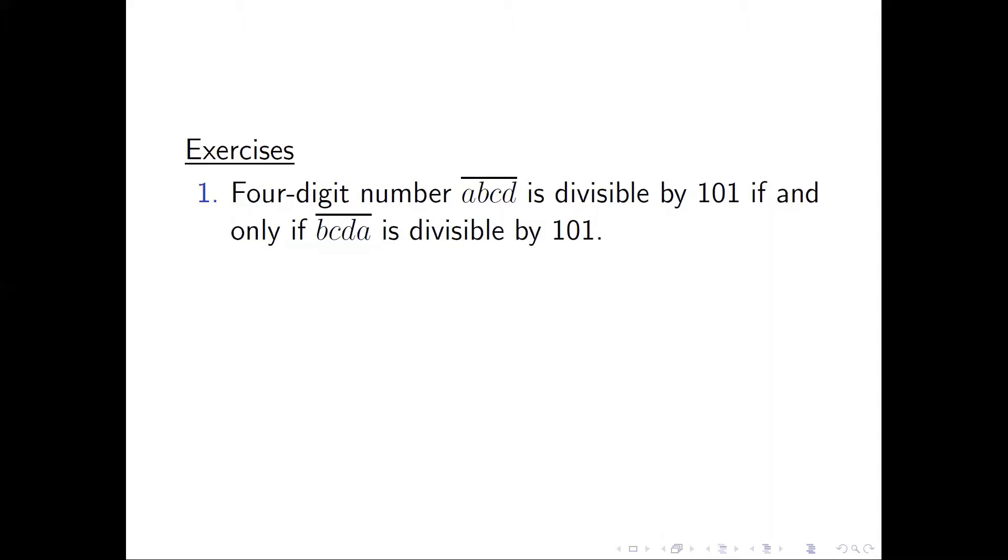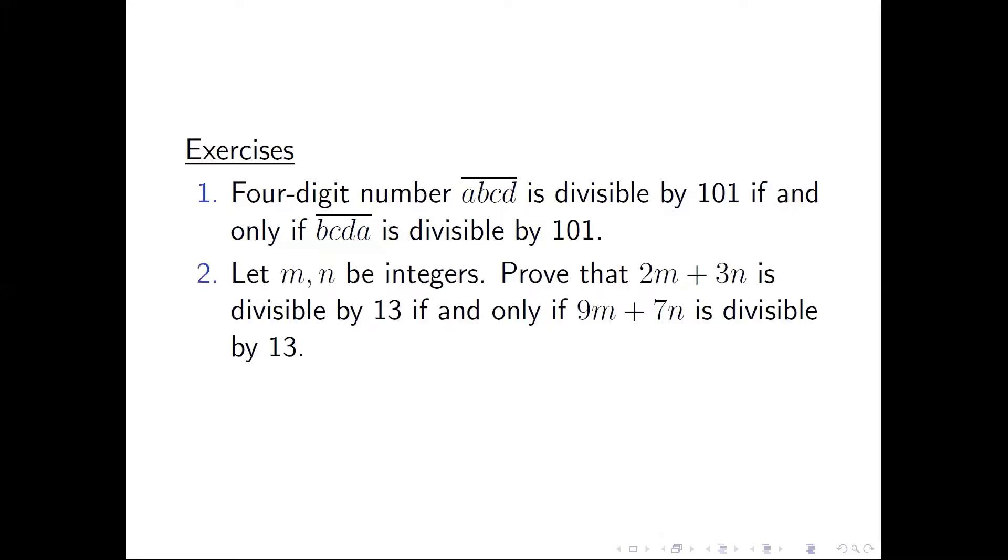This is very simple. We can skip that and let's look at the second one. Let M and N be integers. Prove that 2M plus 3N is divisible by 13 if and only if 9M plus 7N is divisible by 13. That's all I have today. Thank you for watching.